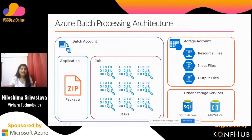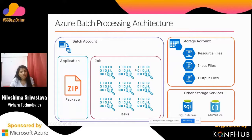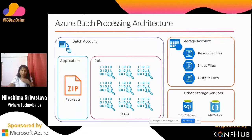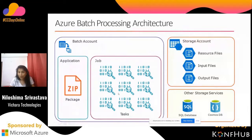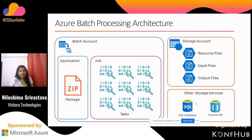Now let's understand the processing architecture. You have a batch account with an application — you zip your exe file, create a pool, and within that pool create jobs. A job can have multiple tasks: for example, pool 'ABC' with job 'XYZ' can have task 1 through task 100. You assign properties like node count and region. In storage, you have resource files, input files, and output files. You can also use SQL Server, Cosmos DB, or other storage services.